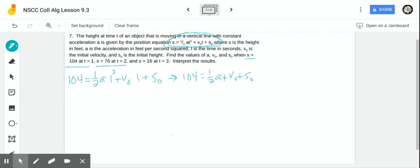Next, we're given that the height is 76 after two seconds. So we plug that into this equation. 76 is one half A times two squared plus V sub O times two plus S sub O. And just cleaning that up, we get 76 equals two A plus two V O plus S O.